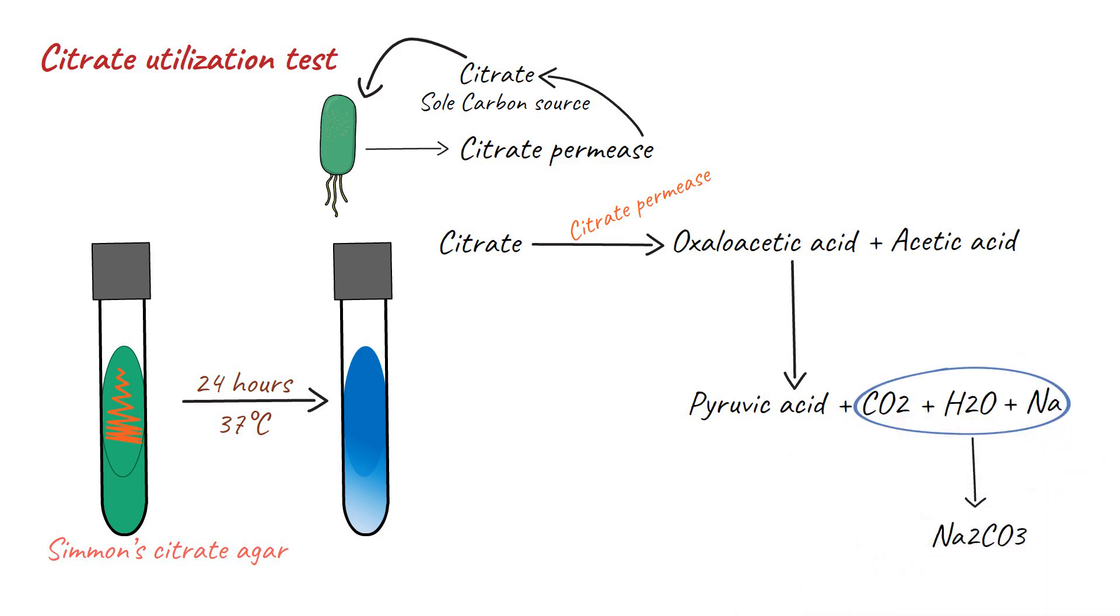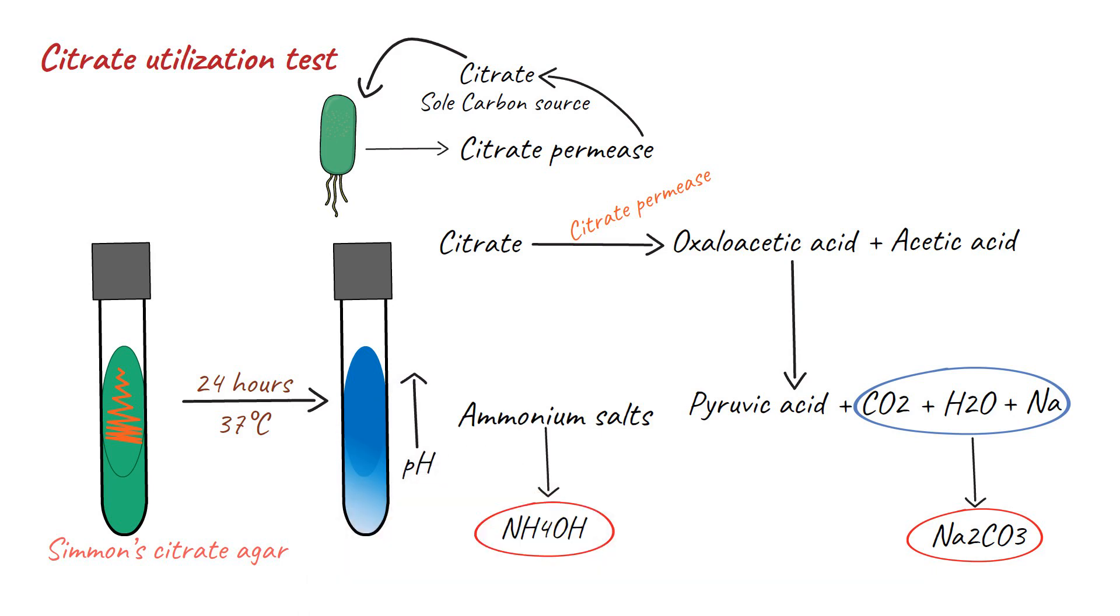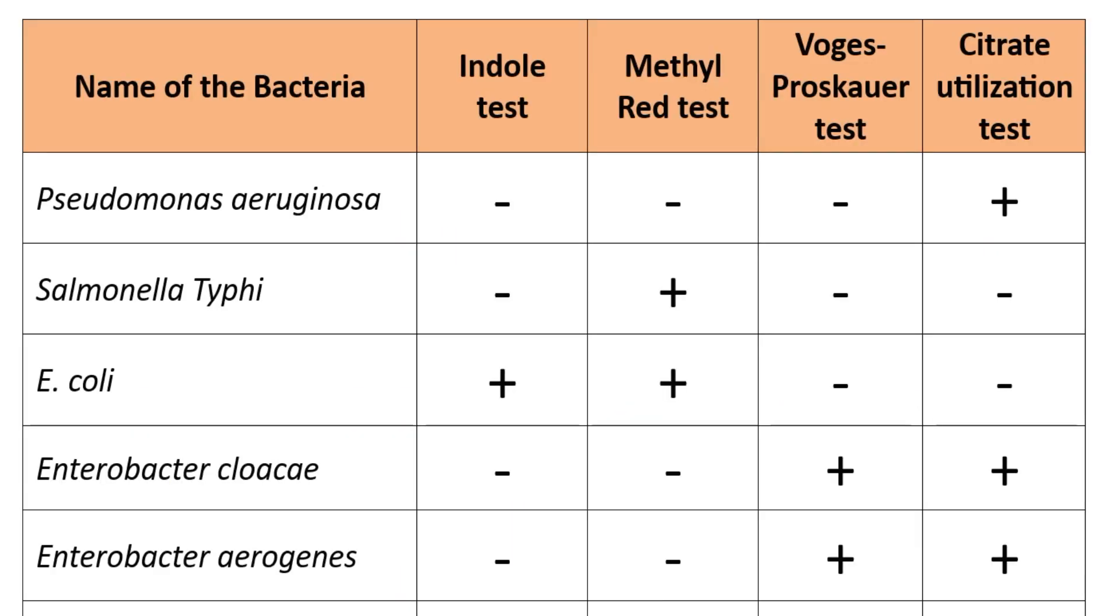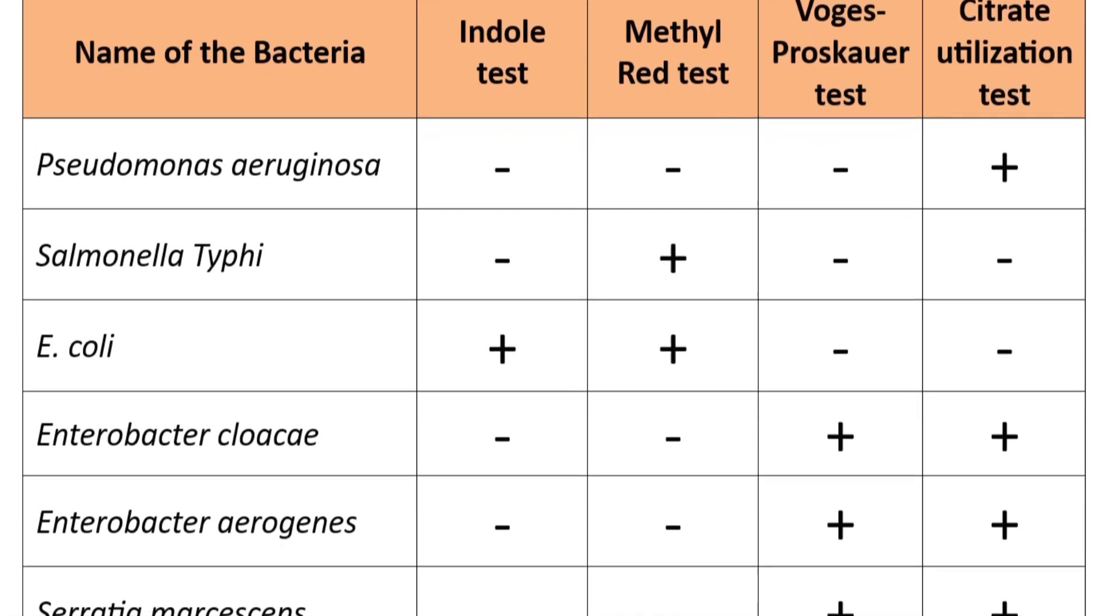The released carbon dioxide will then combine with H2O and excess sodium to form sodium carbonate. Additionally, the ammonium salts in the medium will be decreased to ammonium hydroxide. The combined effect of sodium carbonate and ammonium hydroxide will increase the pH of the medium. As a result, the bromothymol blue indicator of Simmons citrate medium will turn the medium to blue color. These are the IMVIC test results of some known bacteria.